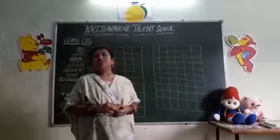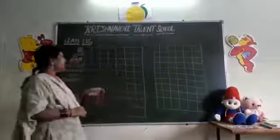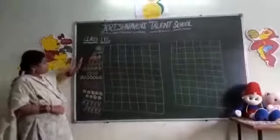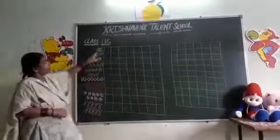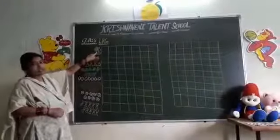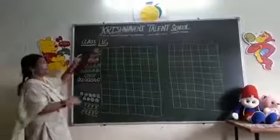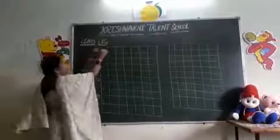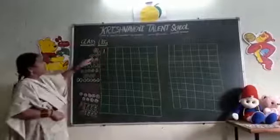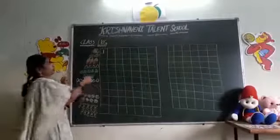In nursery also we have learned the numbers. So see here. Now some pictures are there. Here you have to count and write. What is the picture? Flower. How many flowers are there? 1. How many buses? 2. 2 buses.